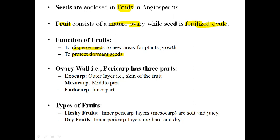The ovary wall, when the fruit is developed, is also known as the pericarp. This pericarp consists of three layers: the outermost layer is the exocarp, which is the skin of the fruit; then the mesocarp is in the middle; and the inner part is the endocarp.